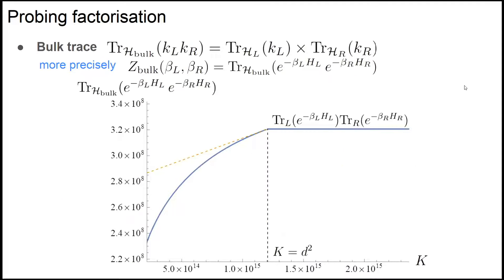For the result, we use the bulk trace to talk about factorization. We consider the operator k_left k_right to be Euclidean time evolution, and show that if we have enough number of states, the bulk trace indeed factorizes into two pieces. This means we have a factorized Hilbert space, but if you have not enough number of states, the Hilbert space and the bulk trace don't factorize.